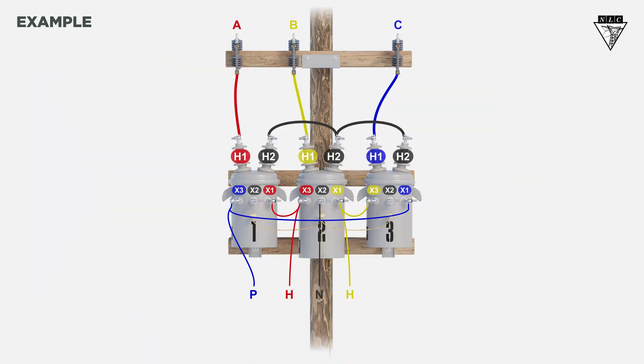On a Y-delta bank, if one of the transformers goes out, power would halt to the customer. This type of connection helps the power company know when there's an outage to the customer.